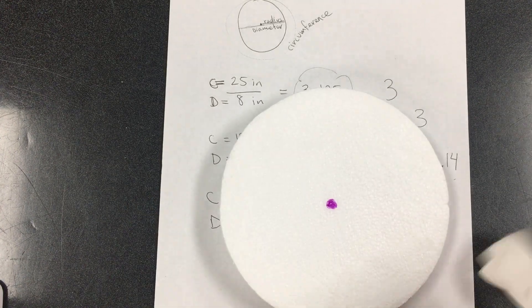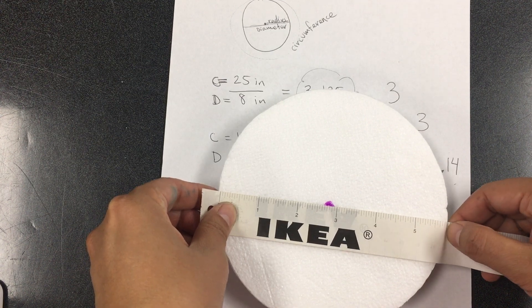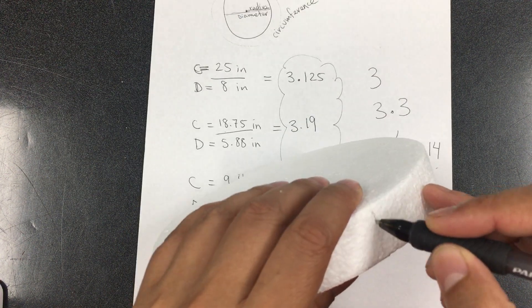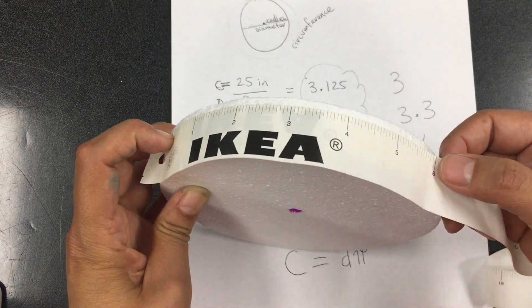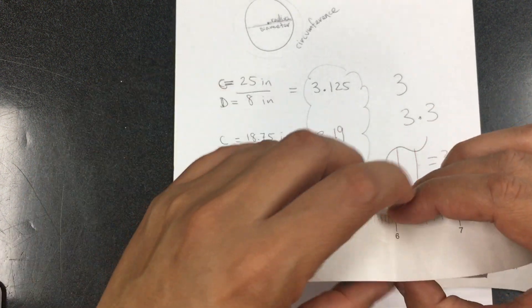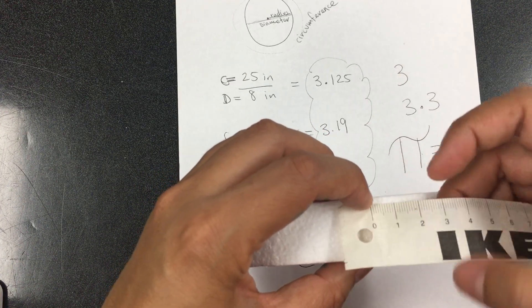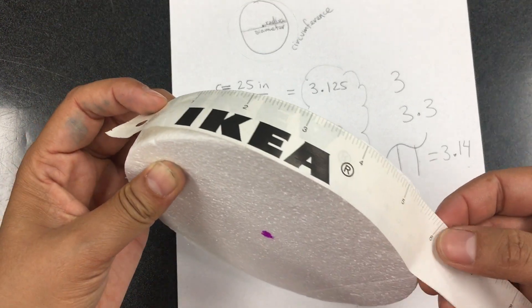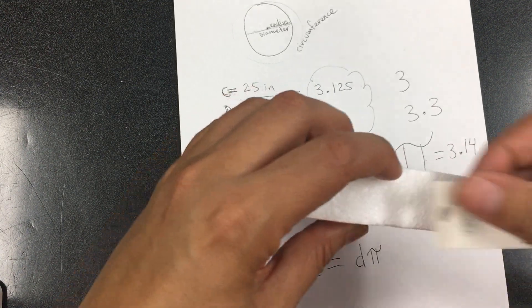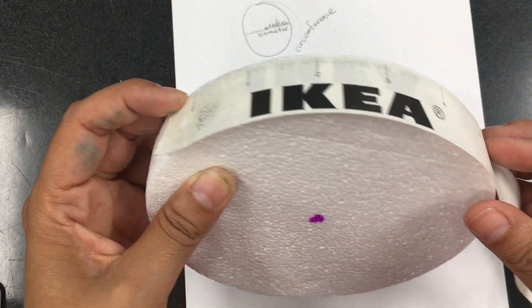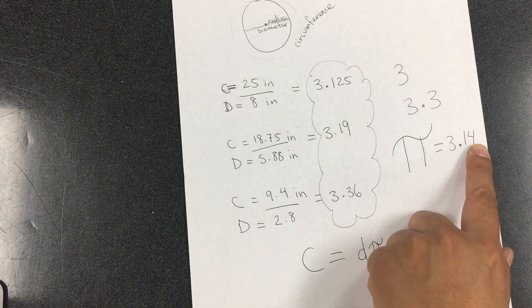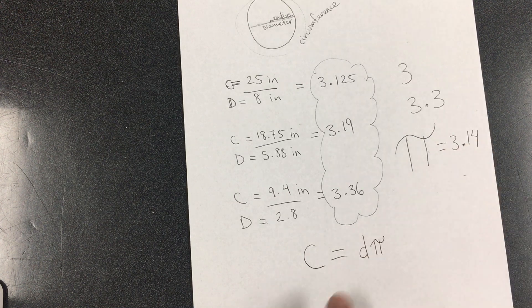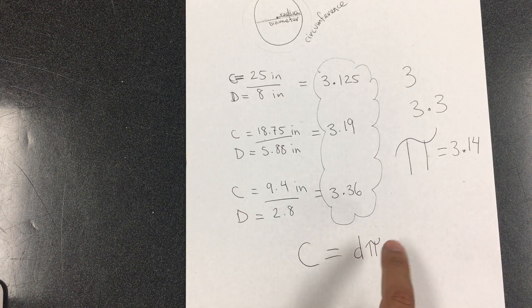Same thing here. The diameter is almost 6 — let's mark it here. It's about 5.5, almost 5.9. So that's 1 up to here. Same thing here, two times right there. Three times up to right there. And you need a little bit more. So that's the three point and a little bit more — this is what pi represents. This diameter rolls around the circle three times and a little bit more.